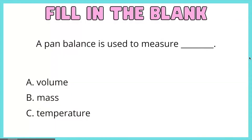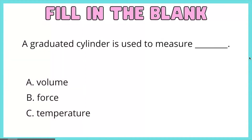A pan balance is used to measure blank. A. Volume. B. Mass. C. Temperature. A graduated cylinder is used to measure blank. A. Volume. B. Force. C. Temperature.